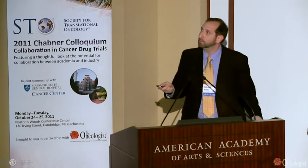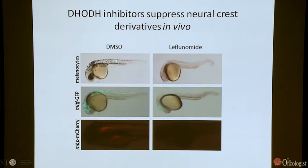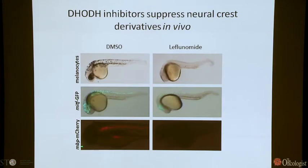The small molecule we primarily use is leflunomide. We asked whether it affects not only expression of marker genes but the actual cell types derived from the neural crest. In a zebrafish embryo at around two days of life, each black cell is an actual pigmented melanocyte. In the presence of our small molecule, these animals are essentially completely albino. This is accompanied by an almost complete loss of an MITF-GFP transgene, and another neural crest derivative — myelin basic protein, marked by mCherry — is also completely absent. Leflunomide suppresses not only neural crest marker gene expression but also the derivative cell types.